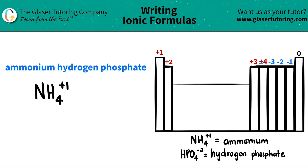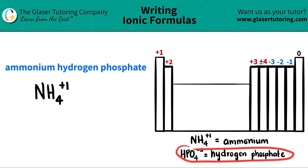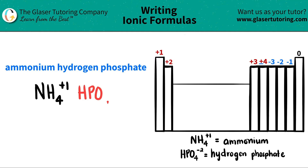So if ammonium is the first component of my ionic compound, that means hydrogen phosphate has to be the other one. And it's an -ate ending, which means that it's also a polyatomic ion. All -ates are polyatomic ions. So I also wrote down what hydrogen phosphate is at the bottom. Hydrogen phosphate is HPO4 with the negative two charge.